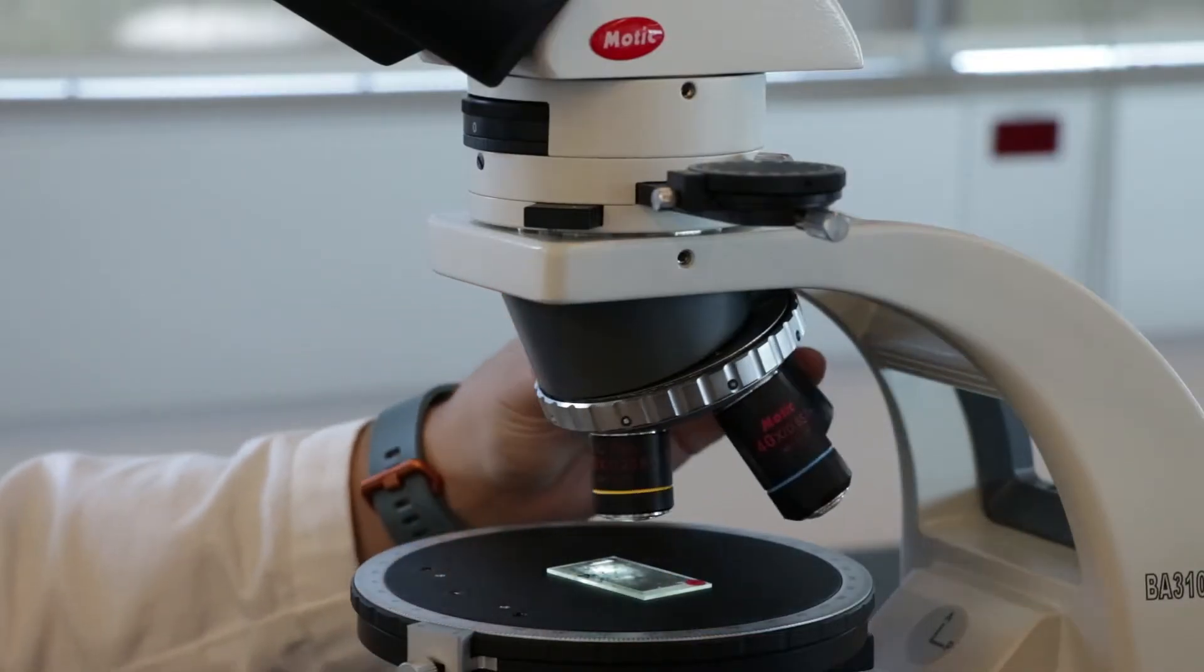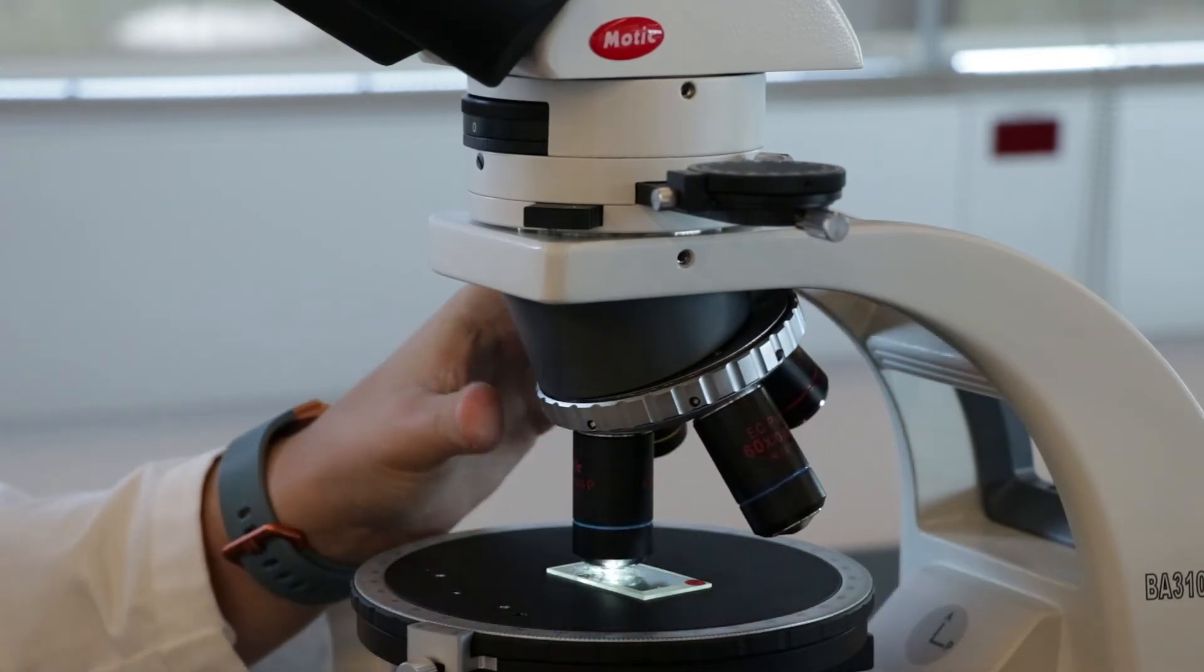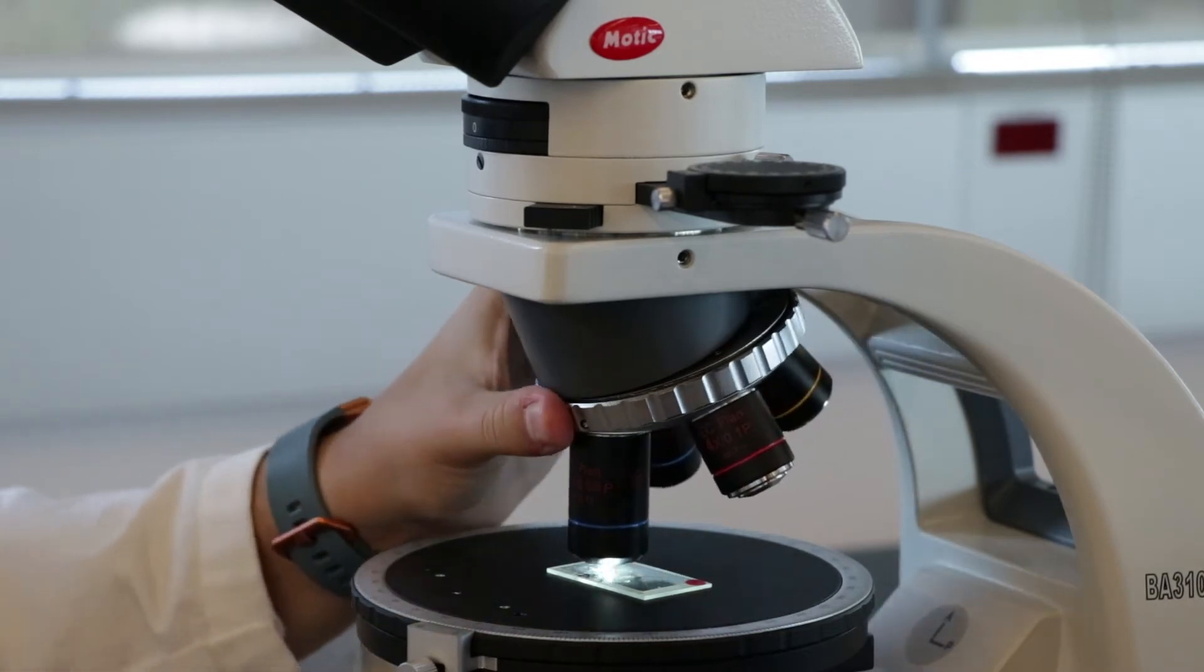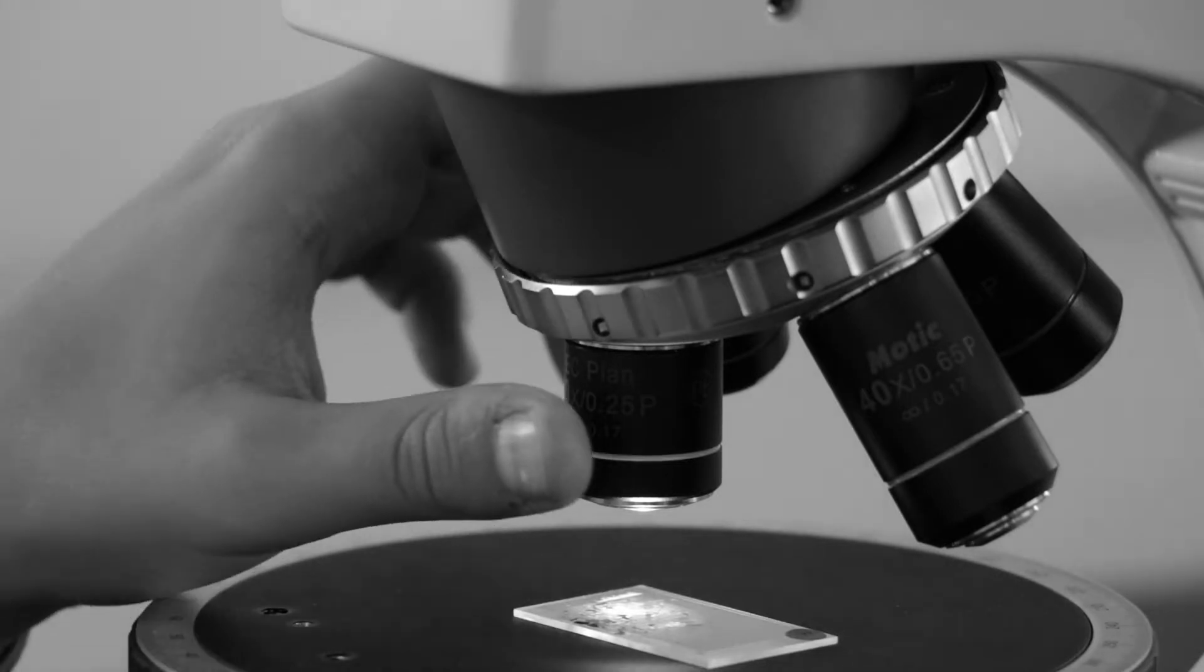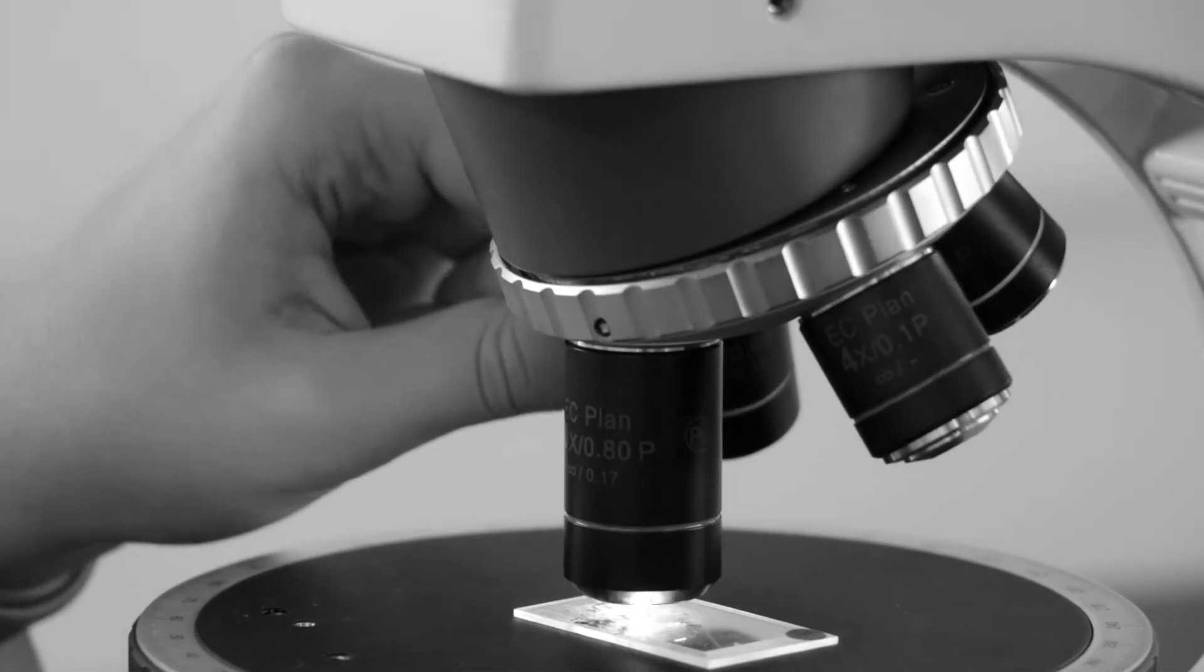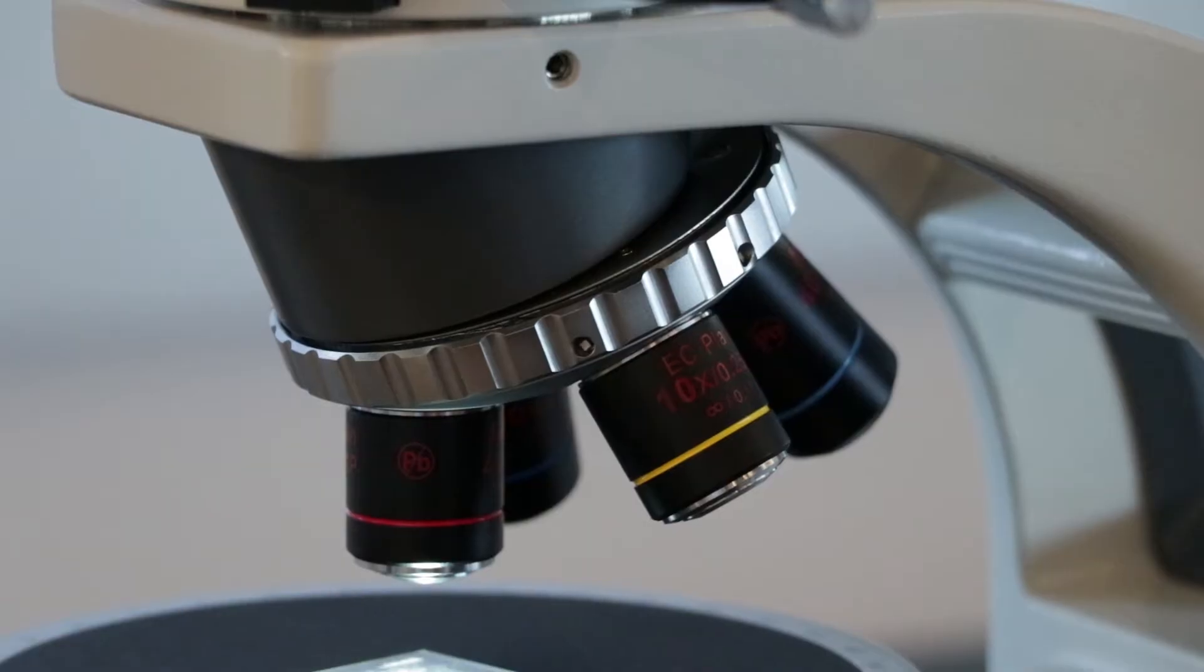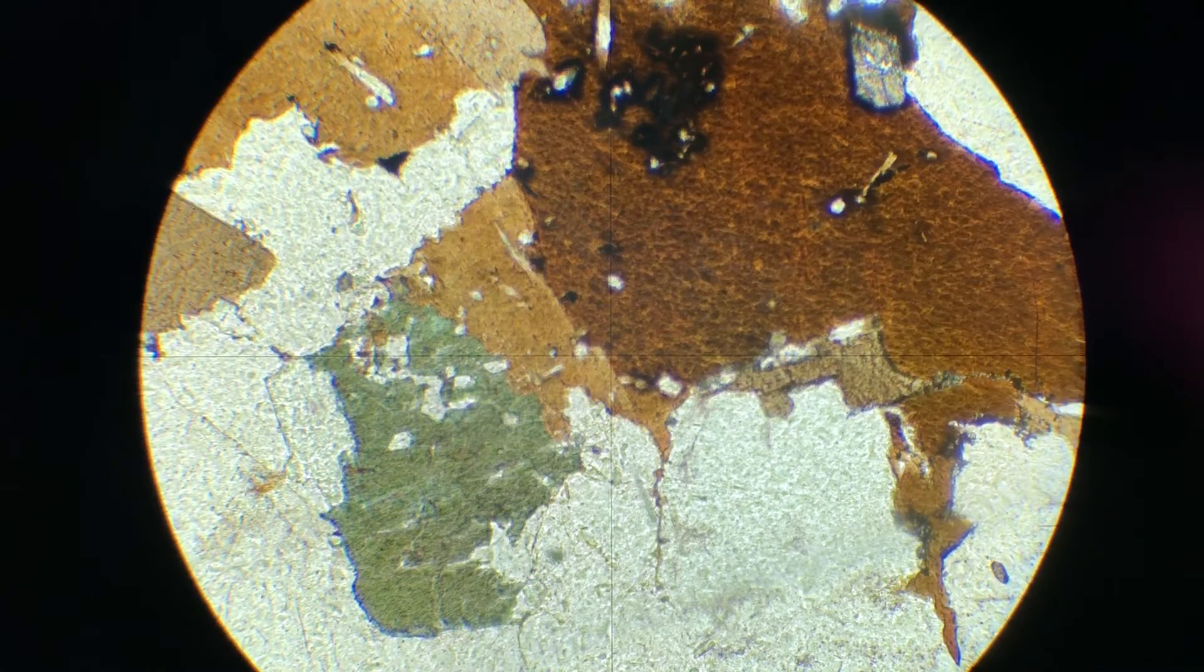Above the stage are the objective lenses. Your microscope may have 3 or 4, ranging from 4 times up to 60 times. To switch the lens, only ever use the silver wheel above the lenses. Never push or pull on the objective lenses themselves. When starting the thin section analysis, use the 4 times objective lens to get a good overview of the bigger parts of the thin section.